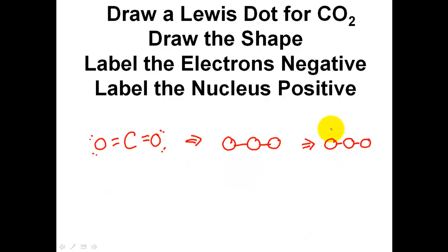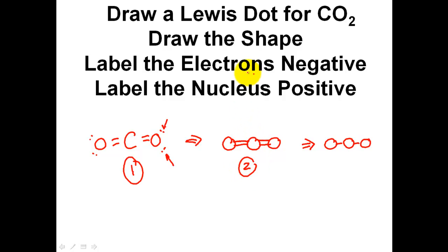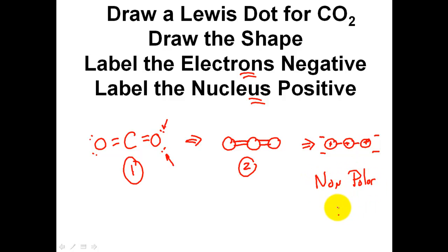Give me everything for CO2. The Lewis dot structure yields a linear shape — it's not bent, it's linear. Anytime I see an unshared pair of electrons, label it as a negative — so I have negatives on both outer ends. My nucleuses are positive, but it's the perimeter that matters. Matching up the ends: negative end, negative end — non-polar. As long as I match up my ends and both are negative, this is a non-polar molecule.